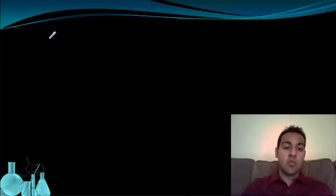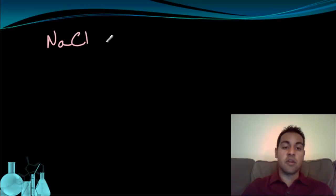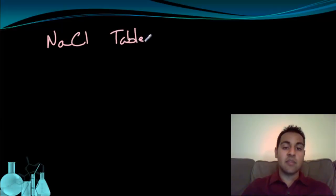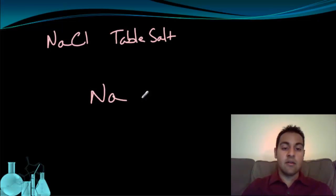So let's look at an example. We have sodium, which is a metal, and chlorine. Put together, they make sodium chloride, or table salt. So what's happening with the bond here? Let's look at these elements separately. We have Na and we have Cl — sodium and chlorine.